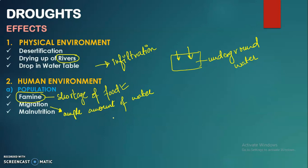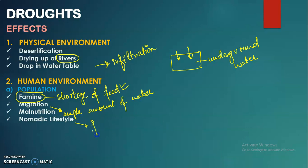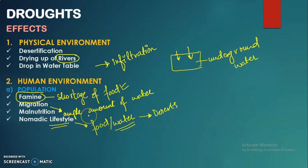The next effect is malnutrition — which is also related to the food crisis created by drought. With no water and a shortage of food, people's health is disturbed and malnutrition flourishes. Another effect is a nomadic lifestyle: people move from one place to another in search of food and water. In desert areas where rainfall is very low, people adopt nomadic lifestyles for this reason.